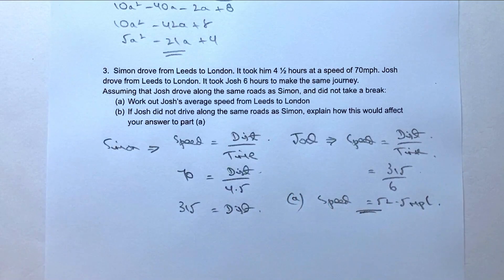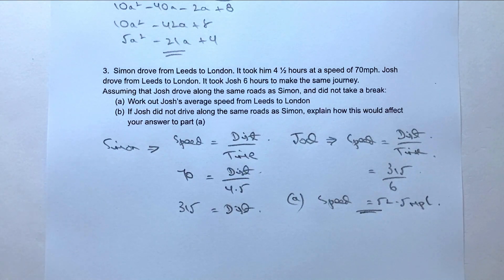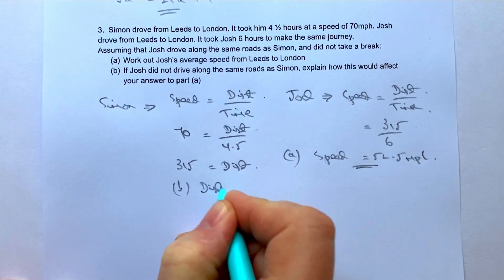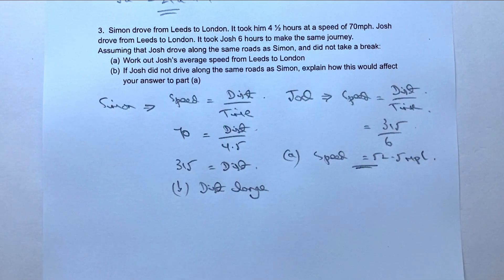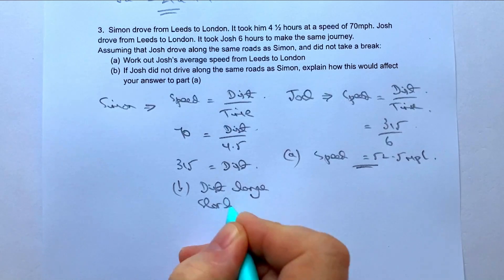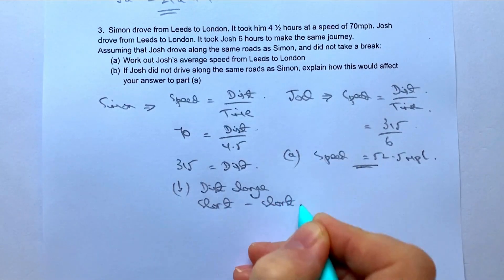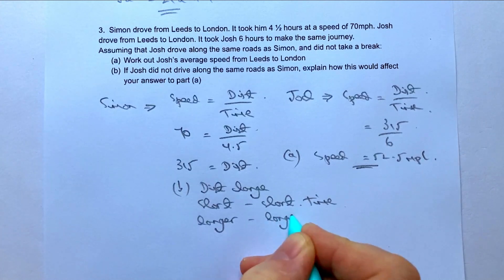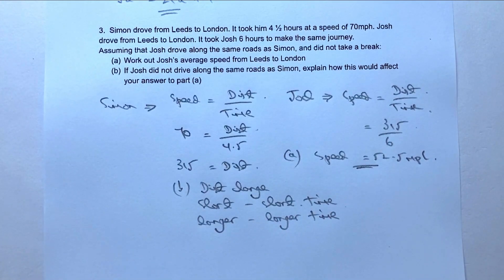Part b is a one-mark 'explain' question: if Josh did not drive along the same roads as Simon, how would this affect your answer? The distance could change — a shorter route means shorter time, a longer roundabout route means longer time. Just add a sentence or two to secure that additional mark.